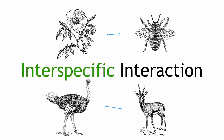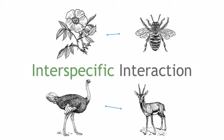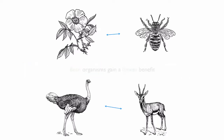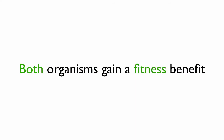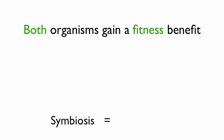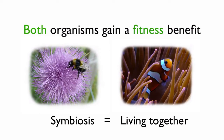Mutualism is a type of inter-specific interaction, so it is an interaction between individuals of different species. Mutualism is where both organisms gain a fitness benefit from an interaction with one another. Mutualism is a type of symbiosis. Symbiosis translates as 'living together', and it just means the long-term interactions between two or more different species who are in close proximity.